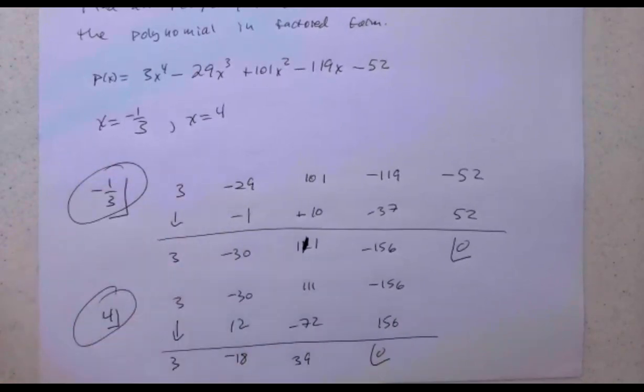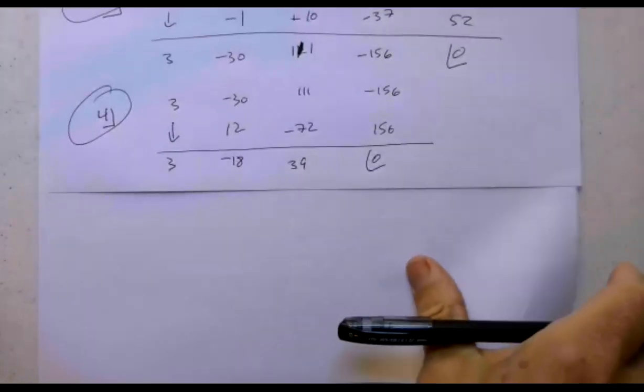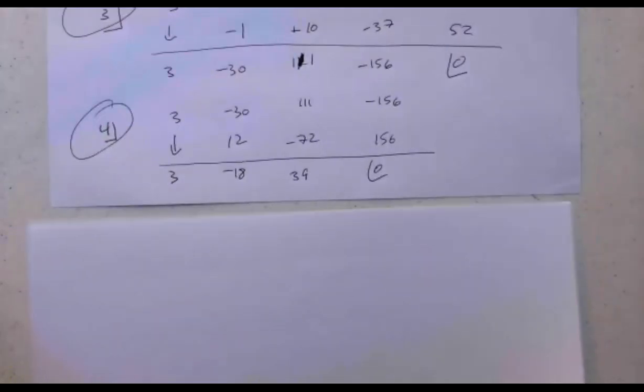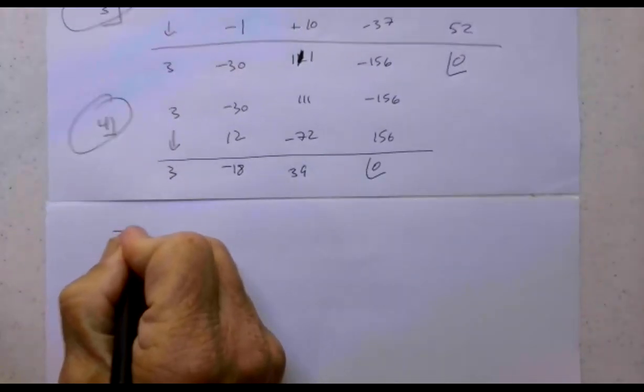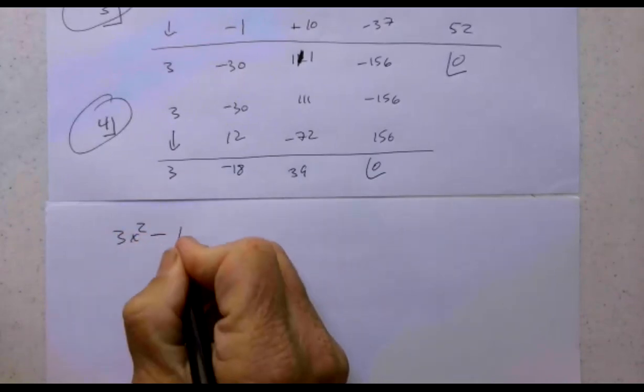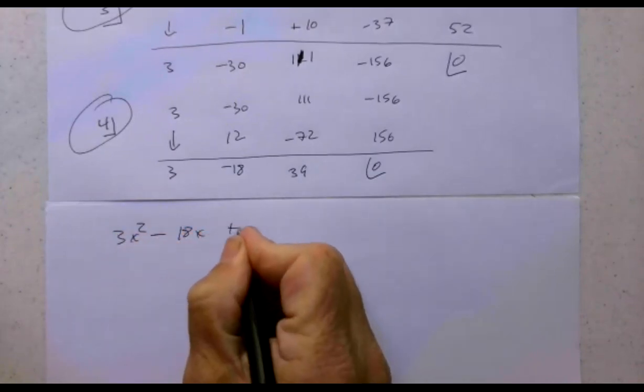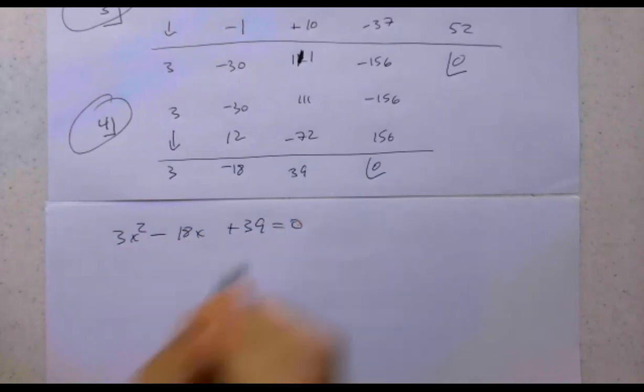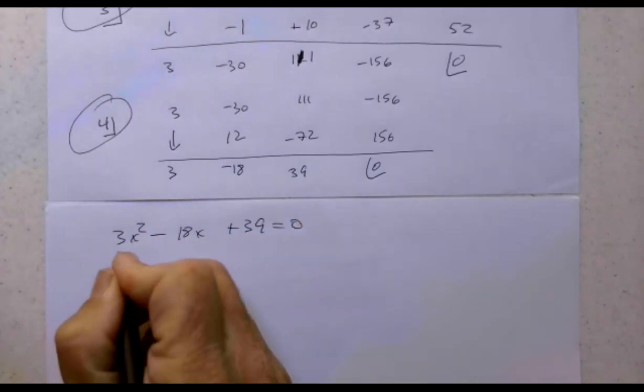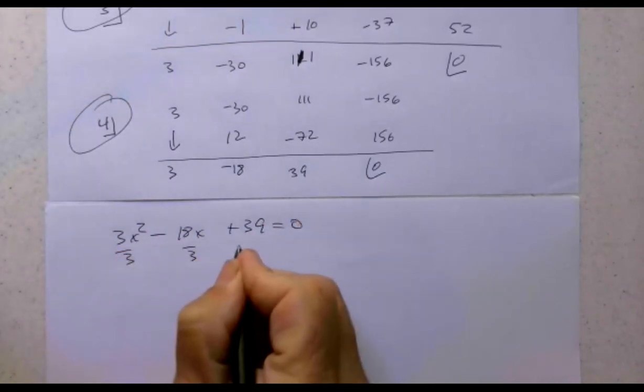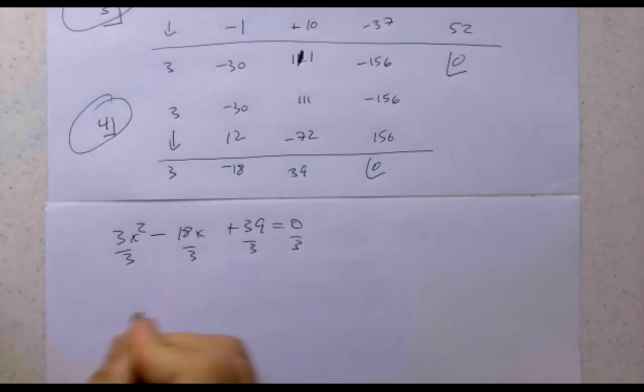What is left is 3, -18, 39, which is 3x^2 - 18x + 39 = 0. To solve this, I'll divide everything by three to make it cleaner. And I get x^2 - 6x + 13 = 0.